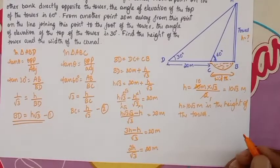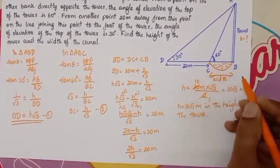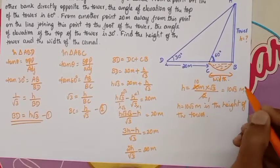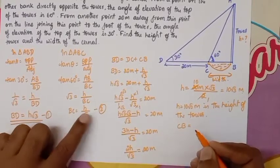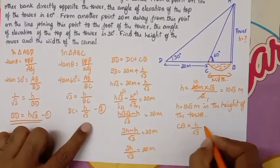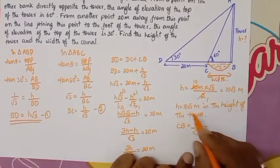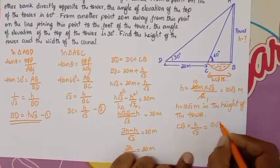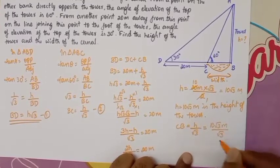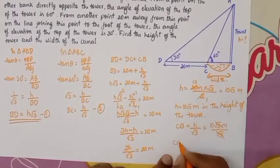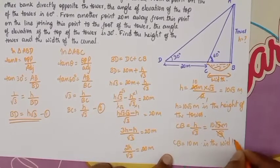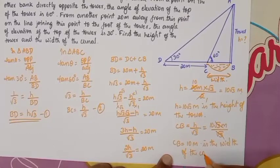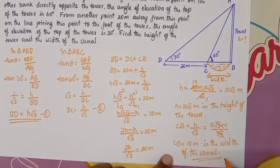Then we have to calculate the width of the canal, which is CB. CB = h/√3 = 10√3 / √3. The √3 cancels, so CB = 10 meters is the width of the canal. This completes this problem.